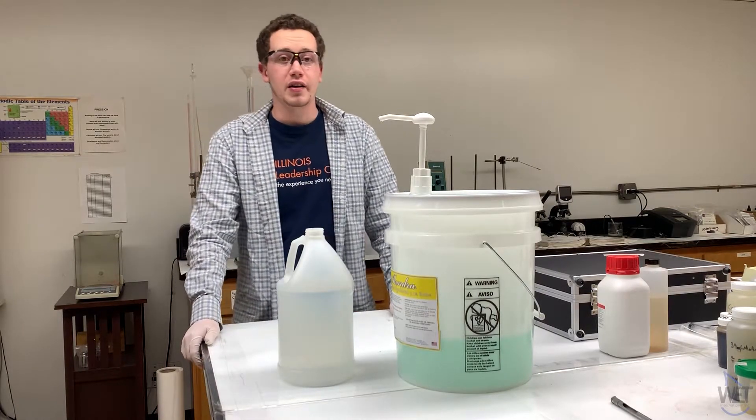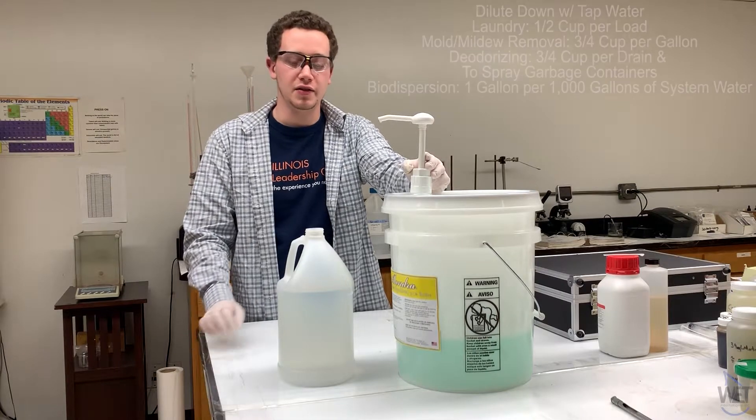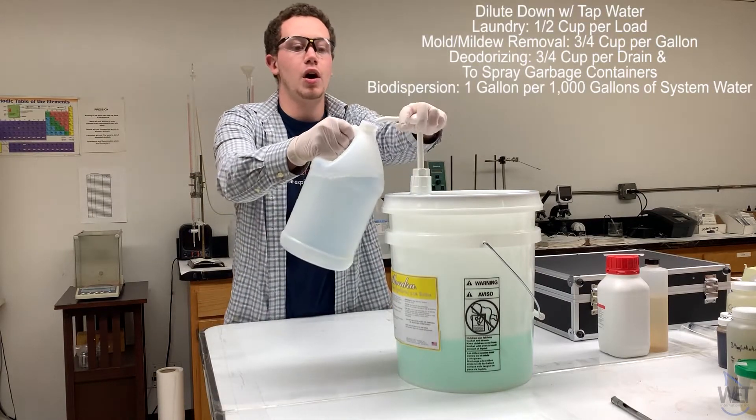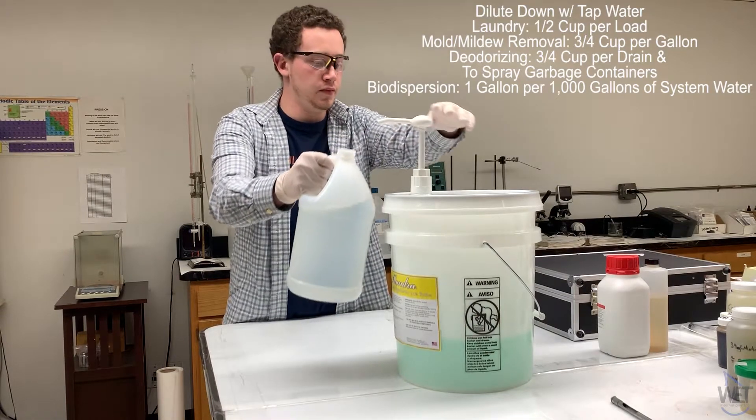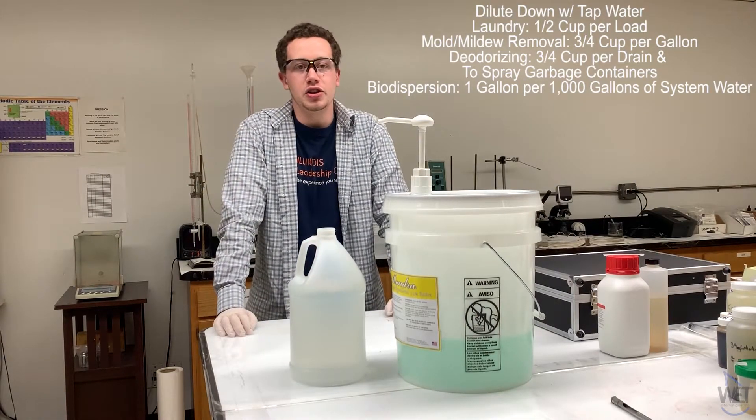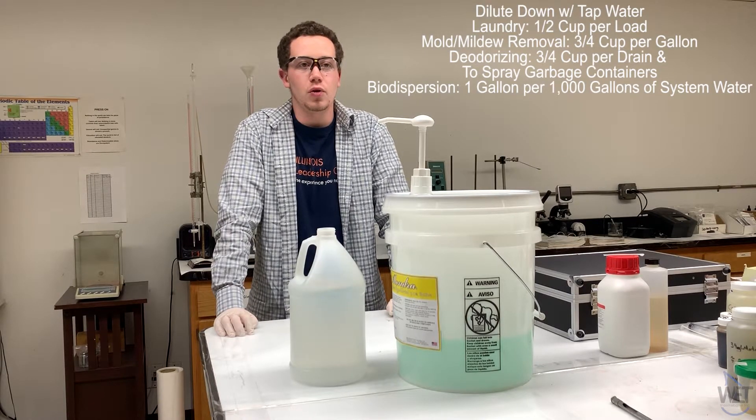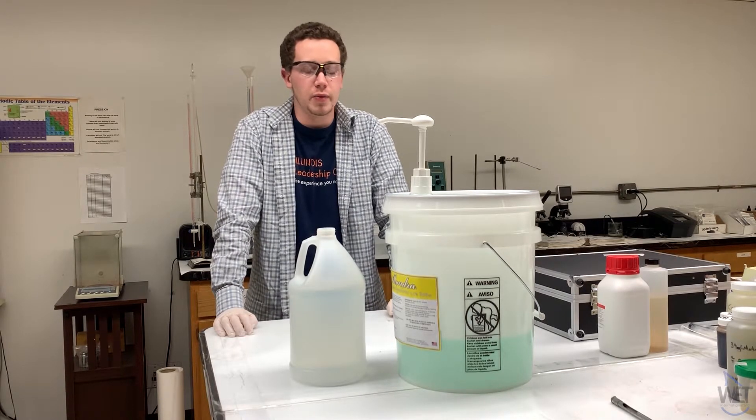To create the sanitizer, take two ounces of concentrate into one gallon of water, or about two pumps. This achieves 1,000 ppm of chlorine, which is recommended by the CDC.